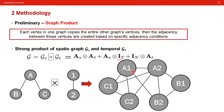The last is the strong product of the spatial graph and temporal graph, which is simply a combination of adjacency conditions from both the Kronecker product and the Cartesian product, resulting in a more dense adjacency structure.